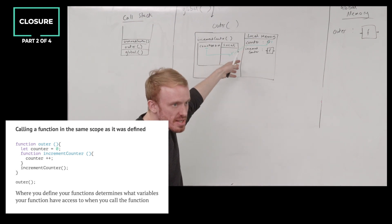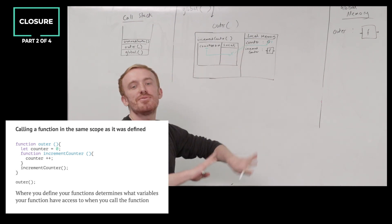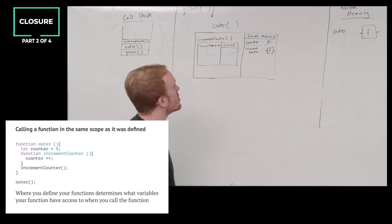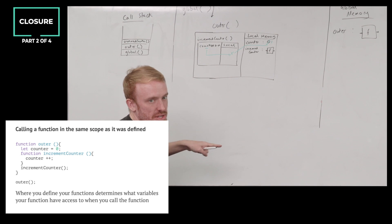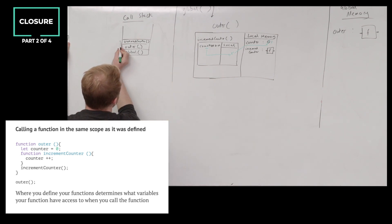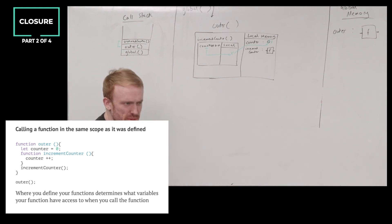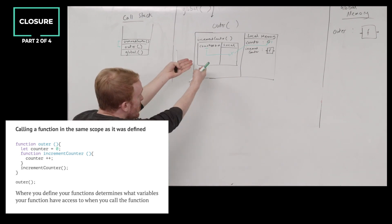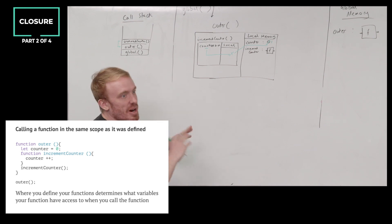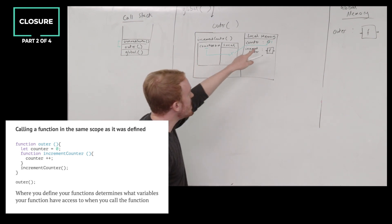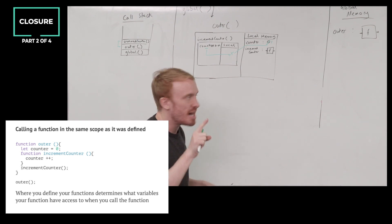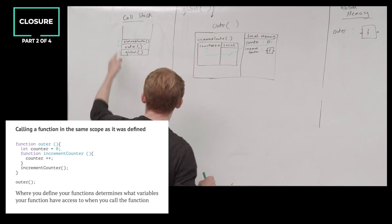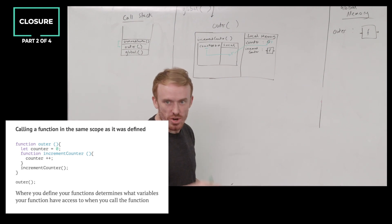So we stepped one layer out to outer. Right now I am so confident — I am 100% confident — that it's because I called increment counter inside of outer, because I ran it inside of outer, one layer down the call stack, that I went out to outer next. It's so obvious: one box inside the other box. The reason why I have counter available to me in increment counter is because I'm calling increment counter inside of outer. It's going down the call stack.